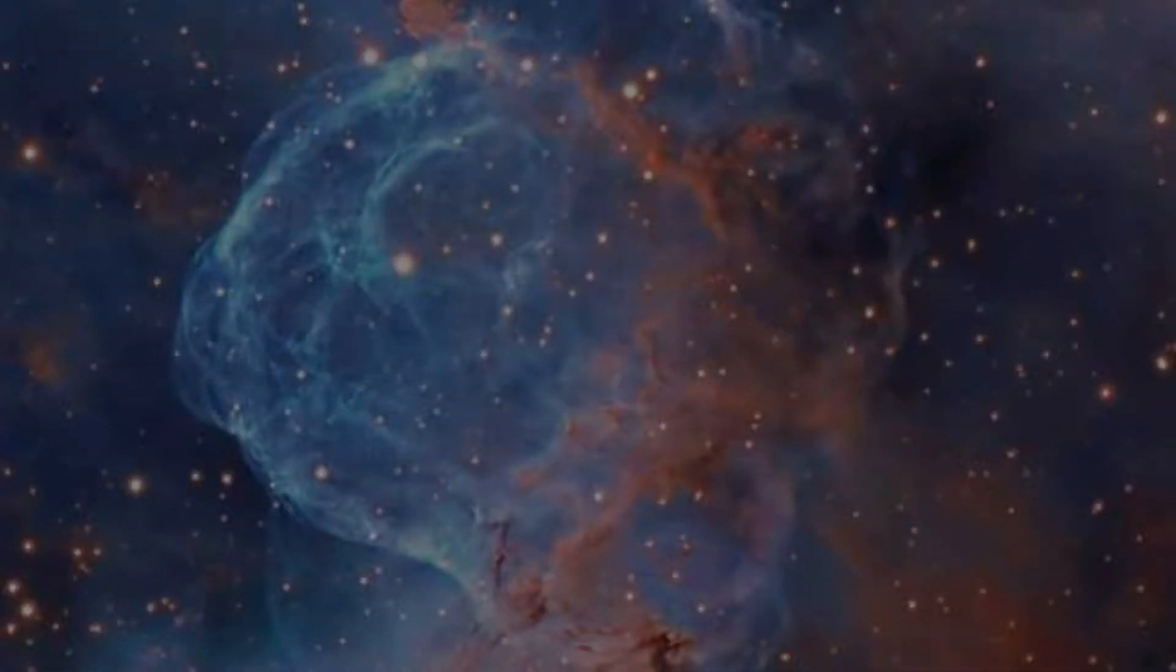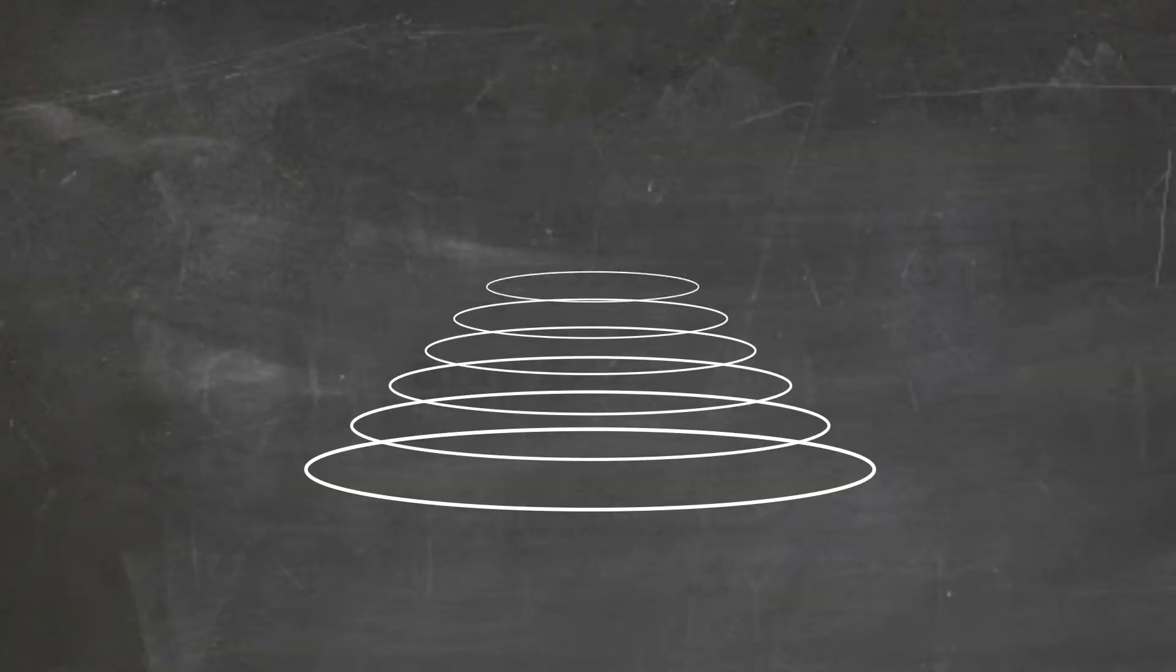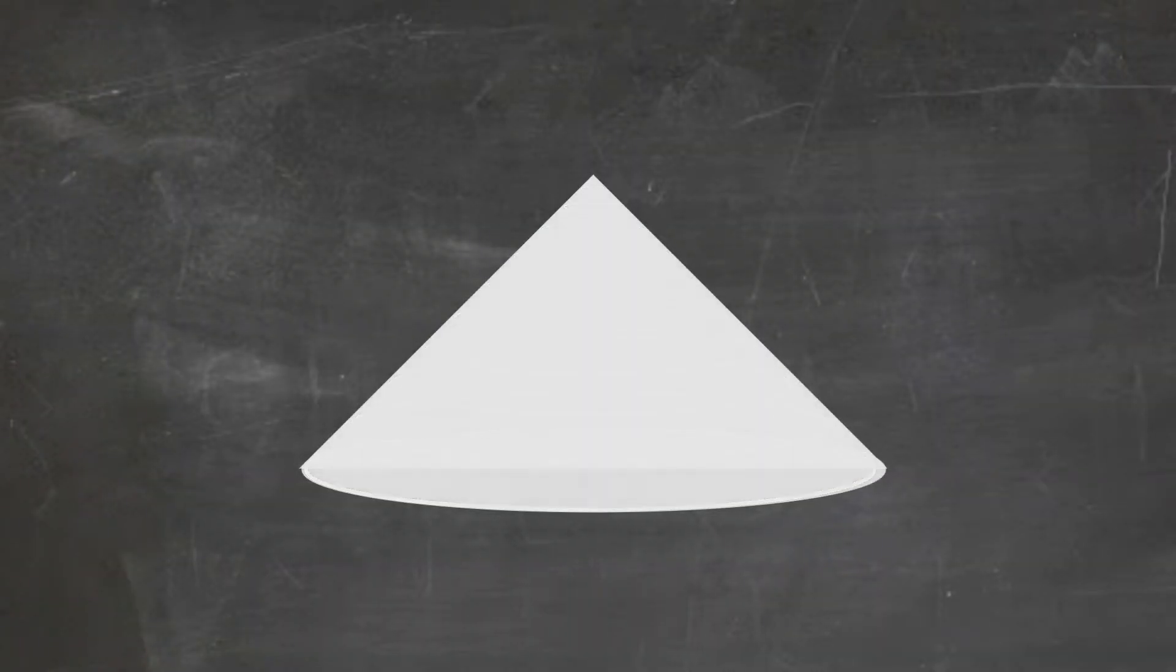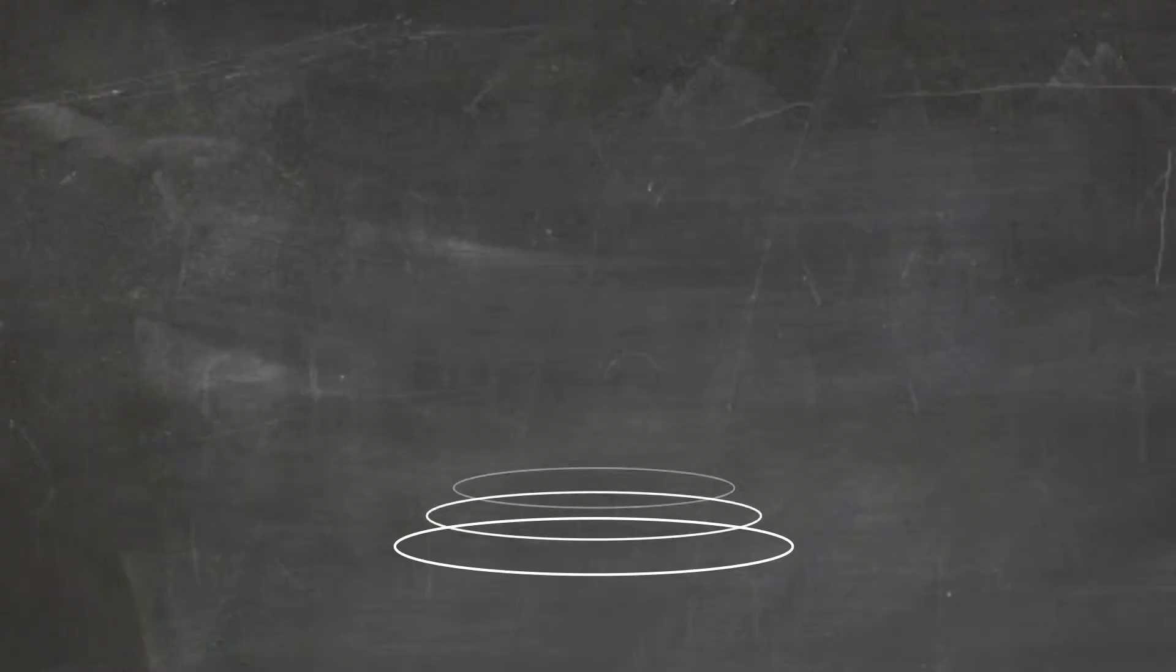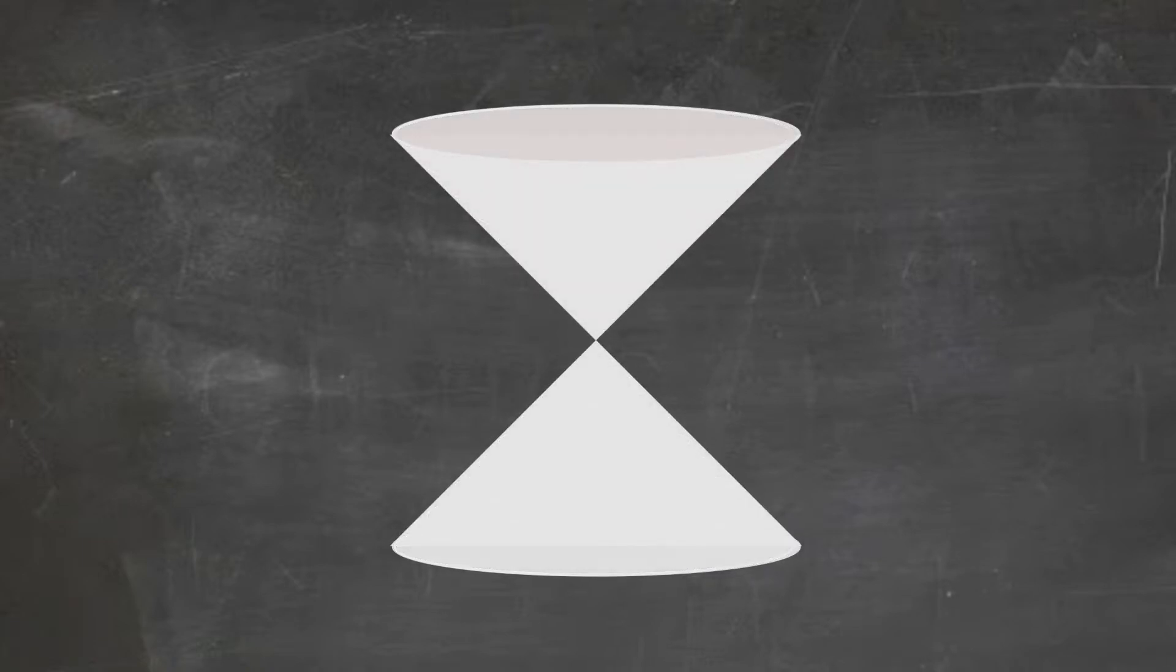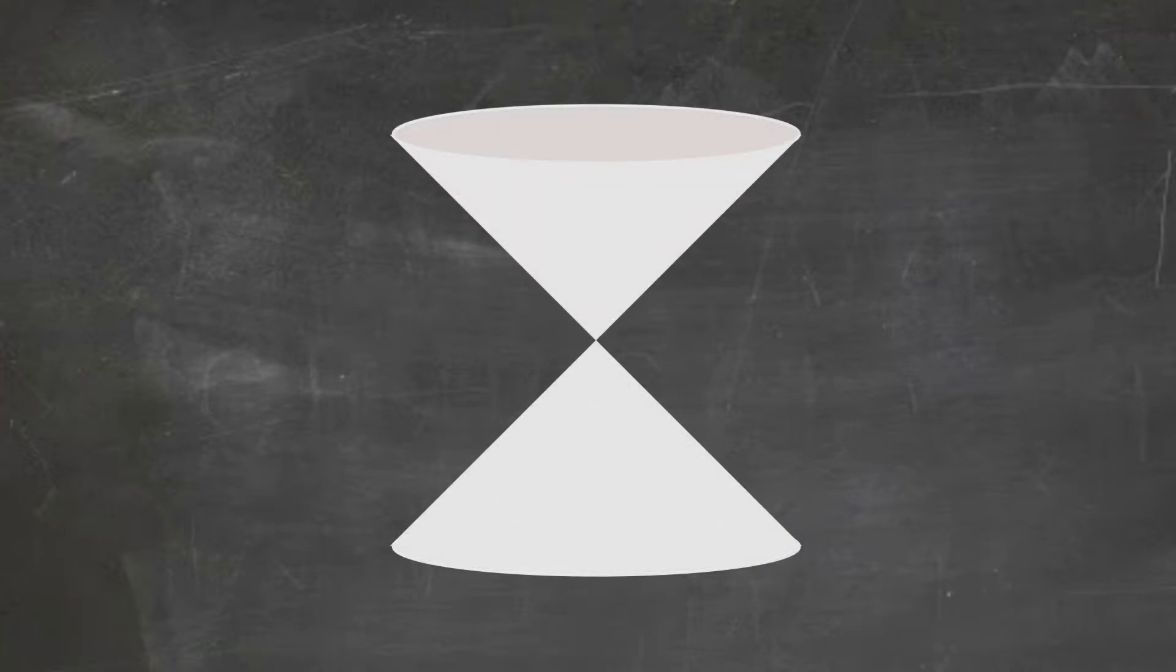Now suppose we have the opposite, a ring of light which is collapsing down to a source. If we depict that motion in space-time, we find a cone oriented in the opposite direction. Now put the two things together, a ring of light that collapses to a source, and then a bulb that flashes so that the light rings expand out again. The resulting double cone is called a light cone. It's a cone in space-time with its edges describing the motion of light.